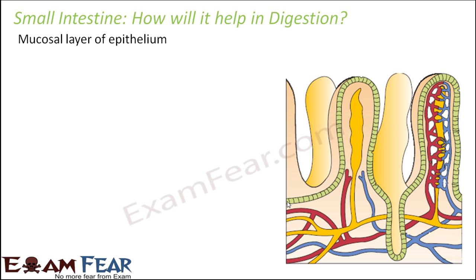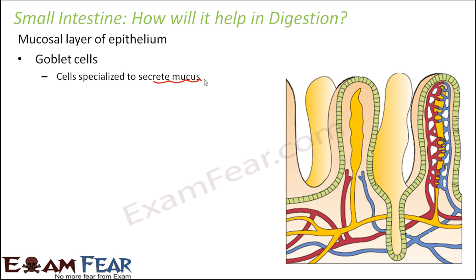We will talk only about the mucosal layer of epithelium, that is the innermost layer. Now there are two types of cells in the innermost layer of epithelium which contribute in the process of digestion. One is the goblet cells, which are specialized to secrete mucus.